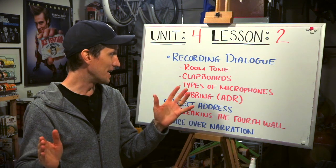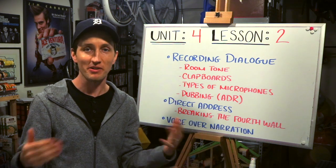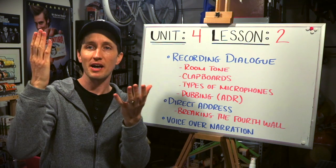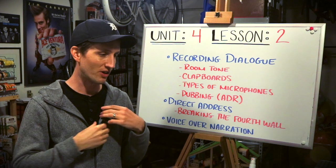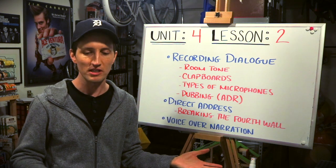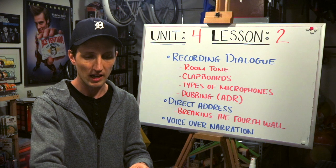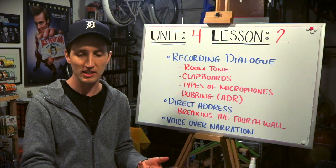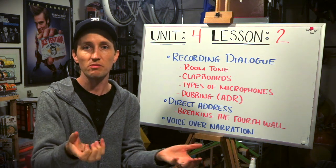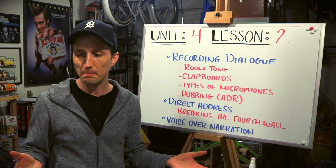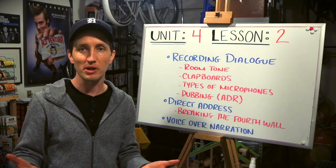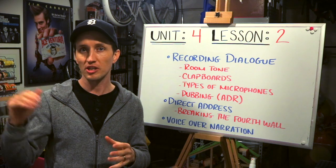Recording dialogue. One: invest in some sort of microphone. You don't want to use the microphone on your camera — that comes with all sorts of different problems. If you have the money to invest in some sort of shotgun microphone or maybe a lavalier microphone to conceal on your subject, by all means do that. But you can also just use your cell phone — plug in your headphone jack and hide it somewhere on the person's body to record your audio that way.